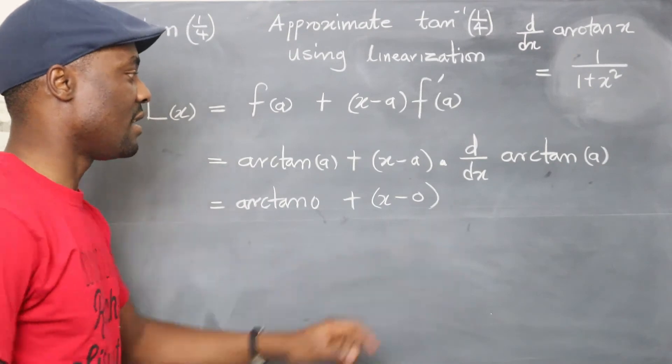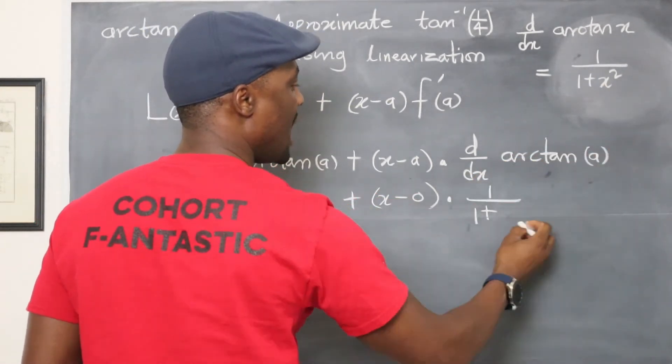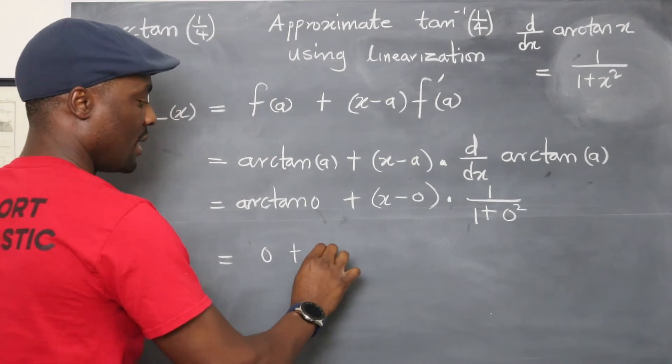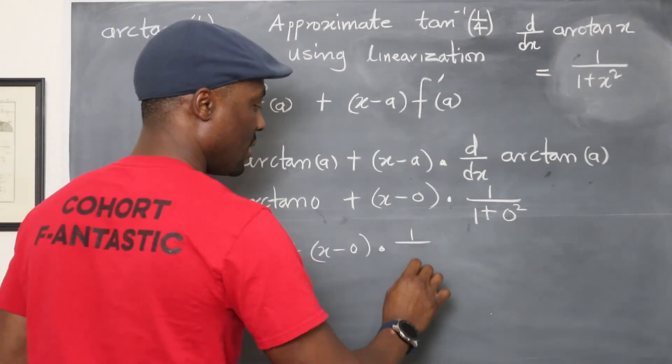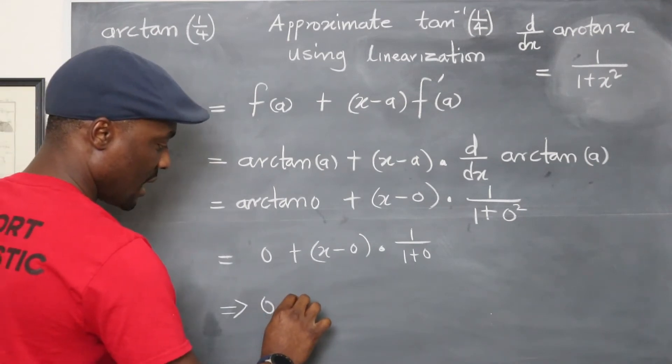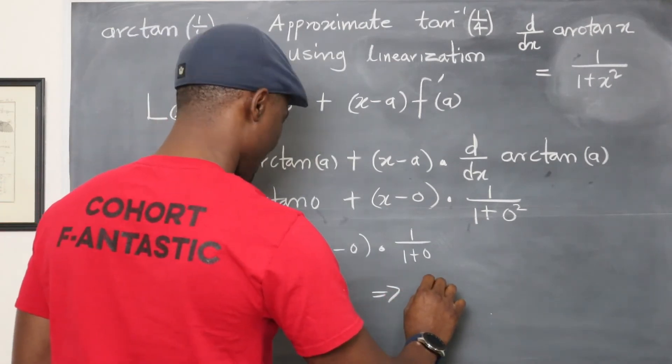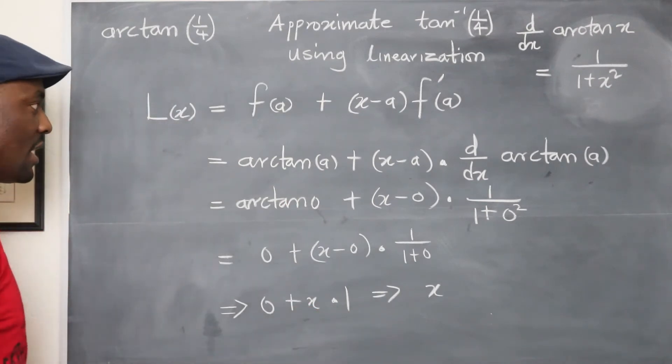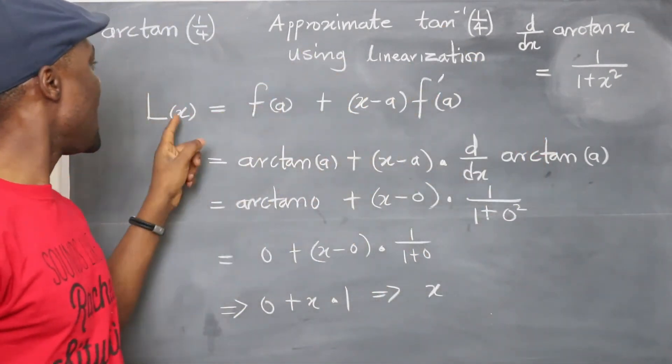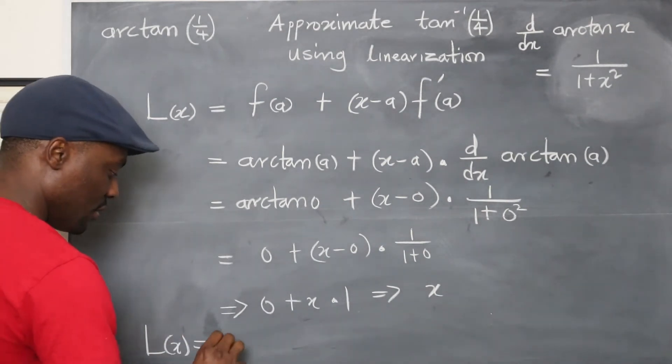So now we can plug that in here and say this is multiplied by 1 over 1 plus, remember, we're choosing our x at this point to be a, and our a is 0, so that will be 0 squared. And that gives us arc tan zero is 0 plus x minus 0 multiplied by 1 over 1 plus 0. Looks like we're going to be getting 0 plus x multiplied by 1, which implies just x. It's just x, because it's going to be 0 plus x, and that gives us x. So the linearization of arc tan anything, if you choose 0 as your a, it's going to be just x, so we can say the linearization of x is equal to x.